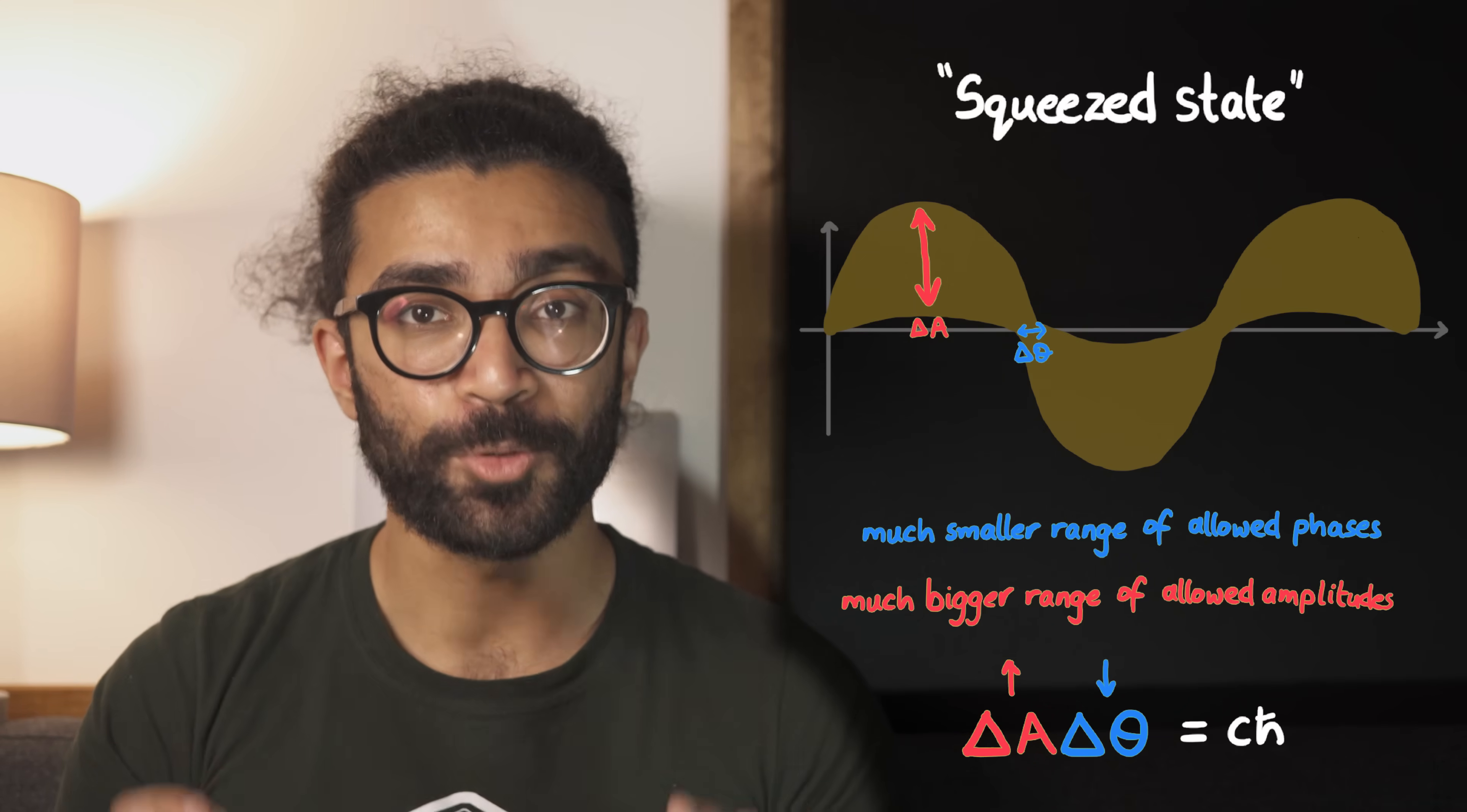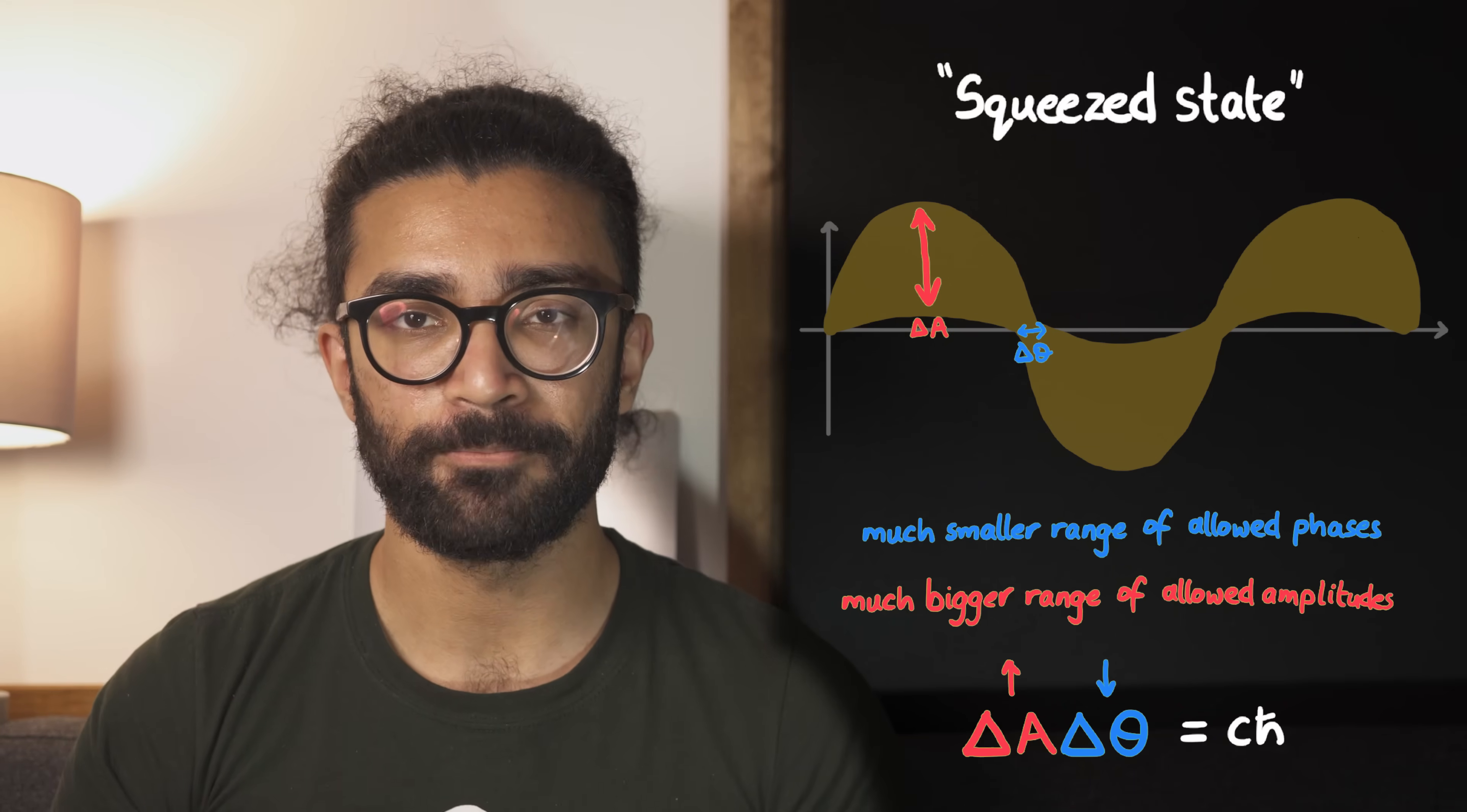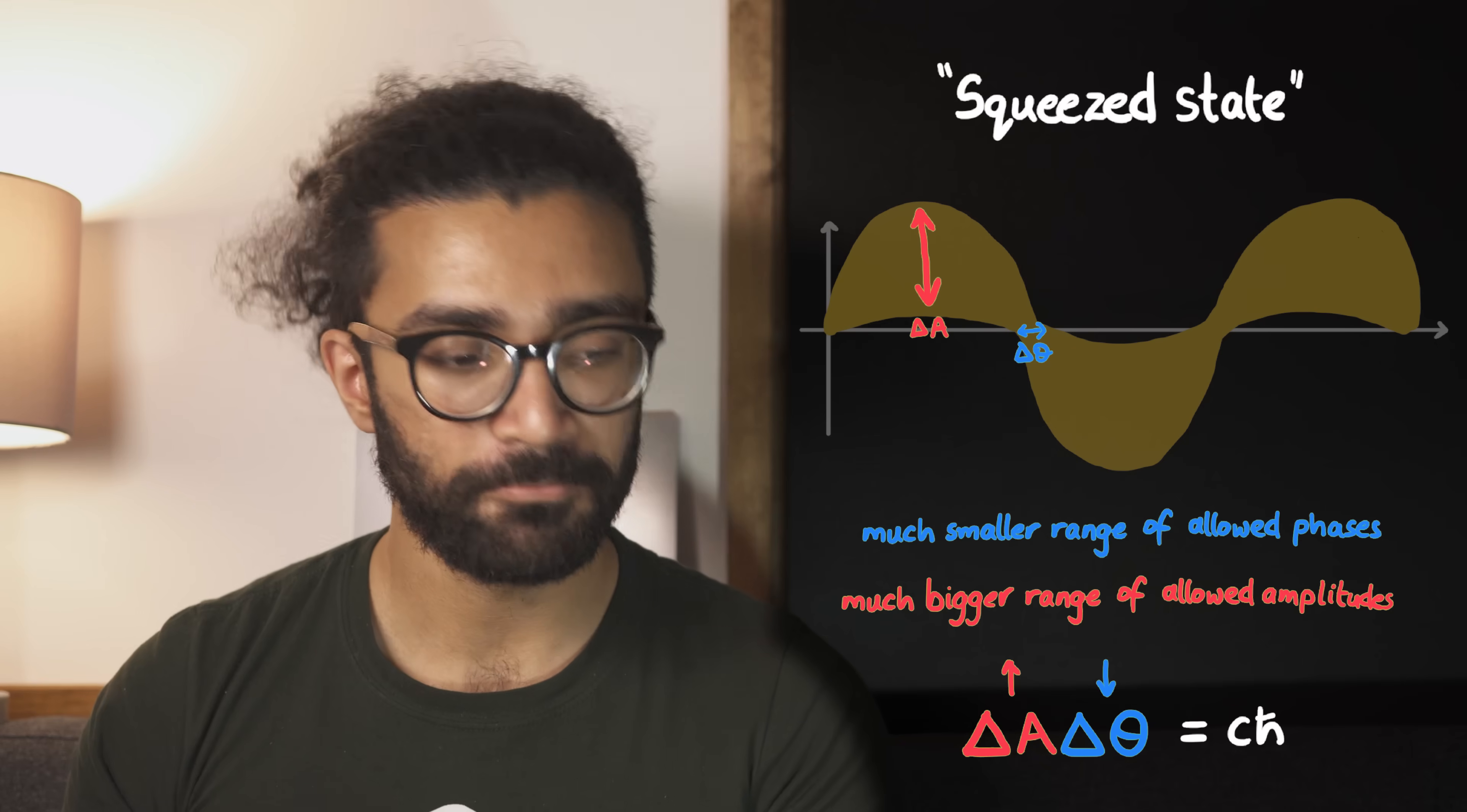This type of light is said to be in a squeezed state, because we have squeezed the uncertainty in one quantity. But of course this is compensated for by an increase in the uncertainty in the other quantity.